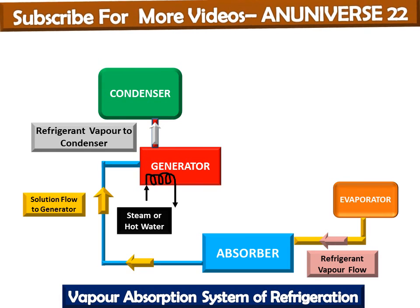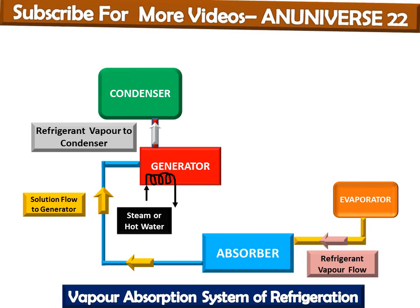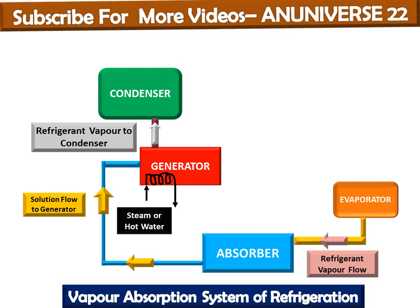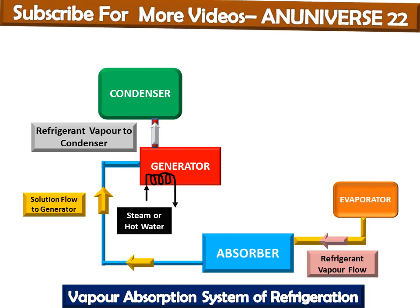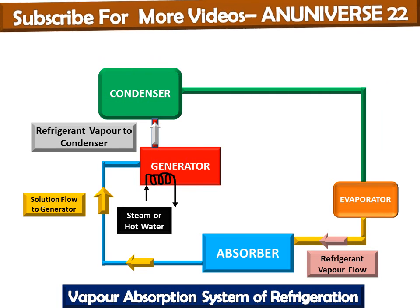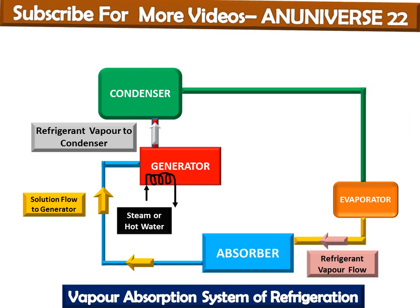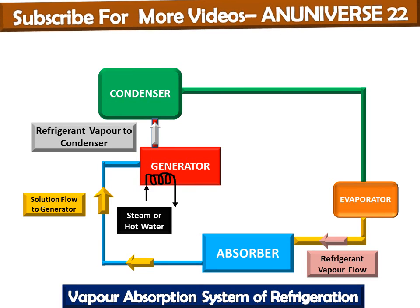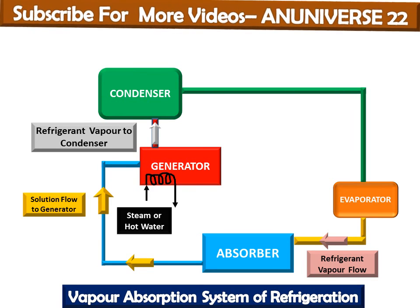So instead of electrical and mechanical energy employed in the mechanical vapor compression system, steam or hot water are used for heating. The refrigerant used in the absorption system is highly soluble in the absorbent. Generally, ammonia is used as the refrigerant and water is used as the absorbent.